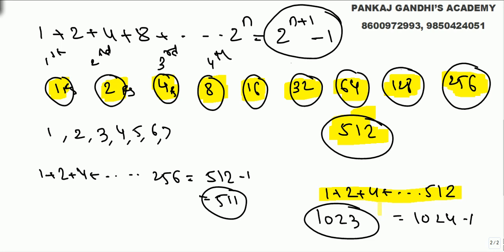If we add powers of 2, we get anything up to the next power of 2 minus 1. So if we add 1 plus 2 plus 4 plus 8: adding 1 and 2, we get 1, 2, and 3 rupees — next bag we keep 4. Adding them, we can give anything up to 7 rupees (next power 8 minus 1). Adding them, we can give anything up to 15 rupees — next bag 16, and so on. So 10 bags will be needed in total.